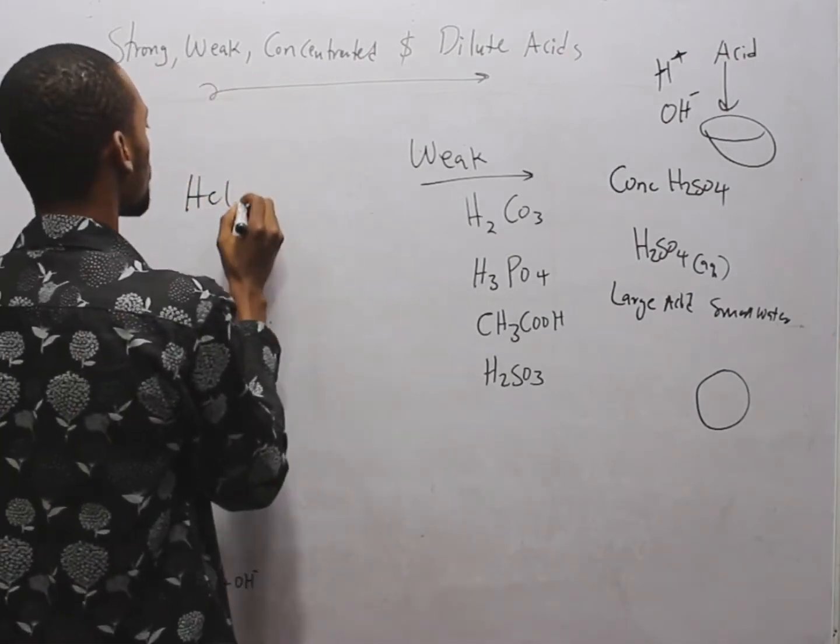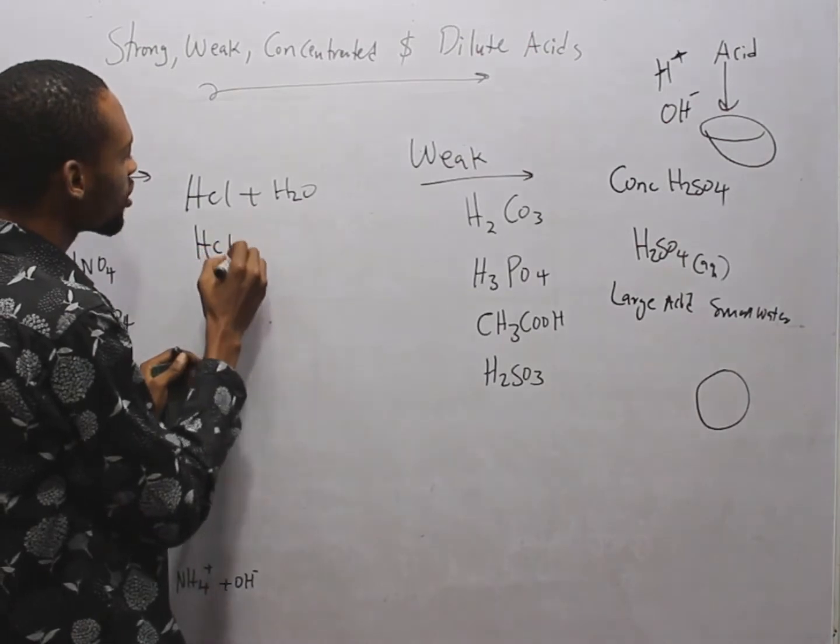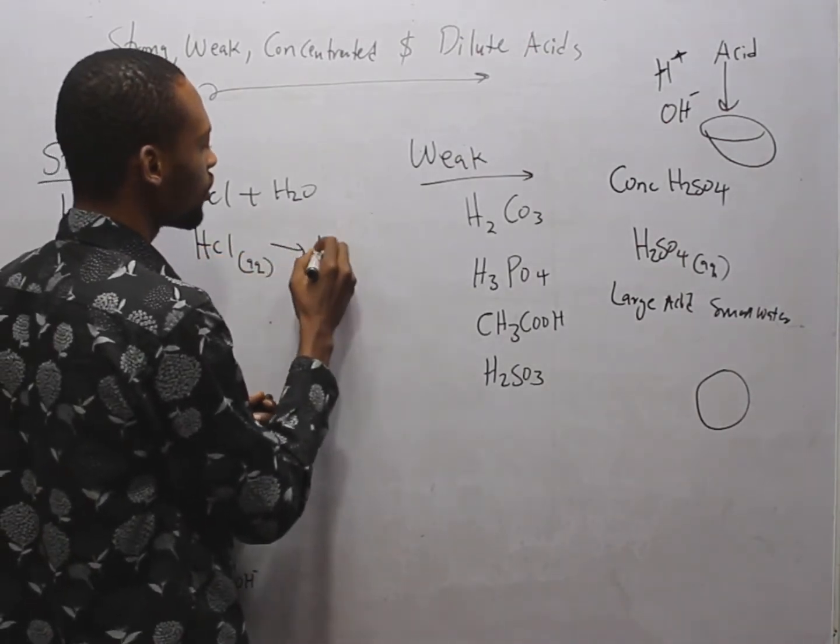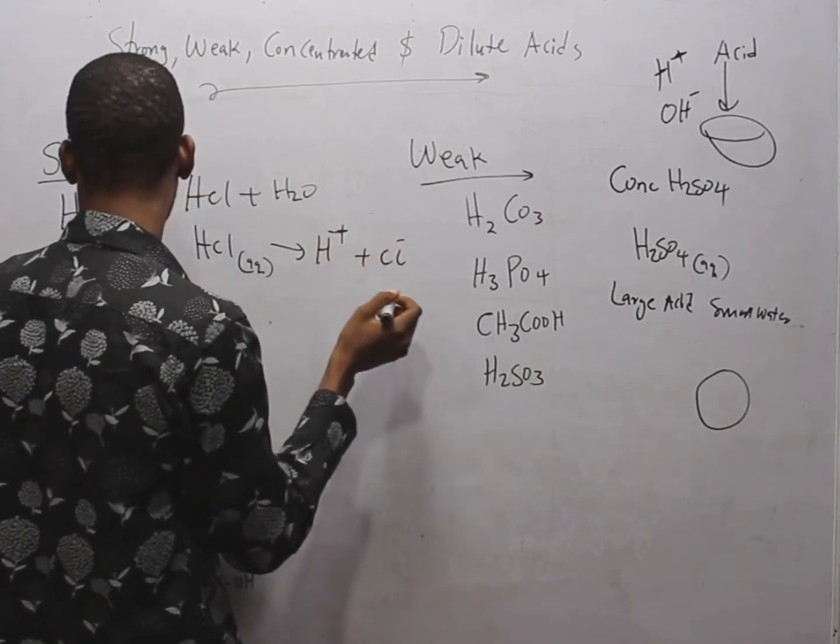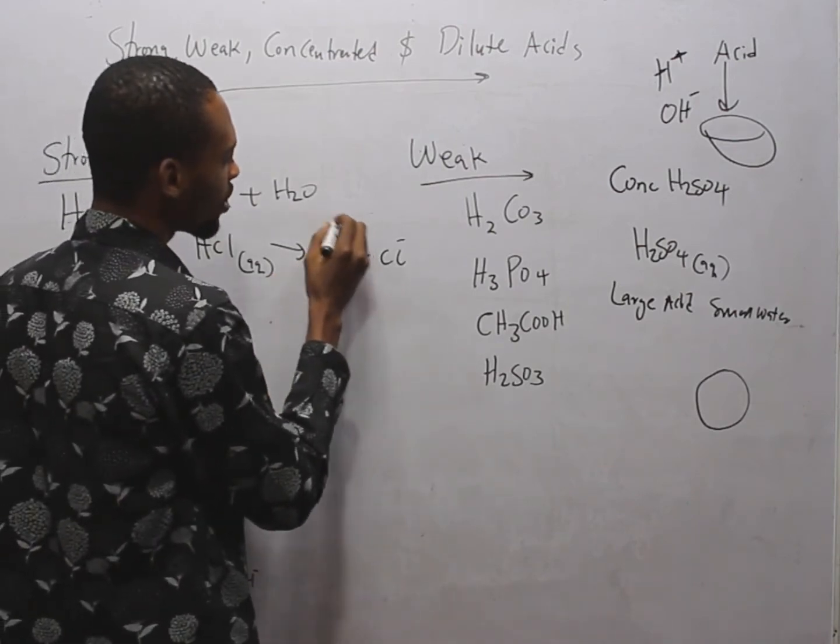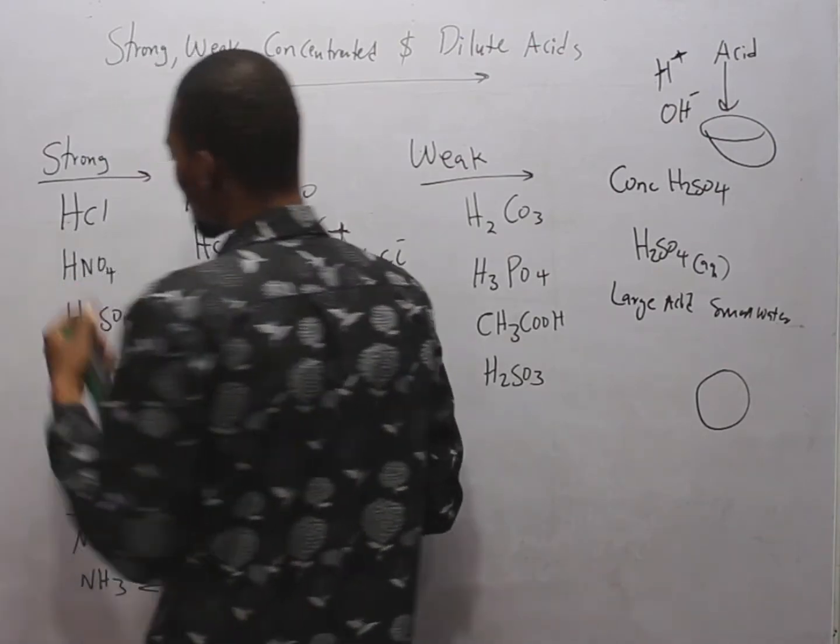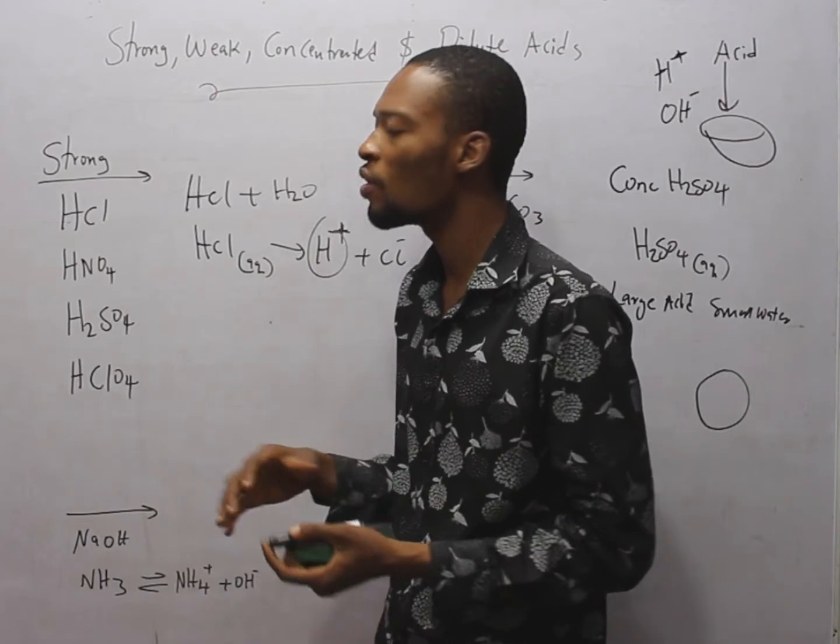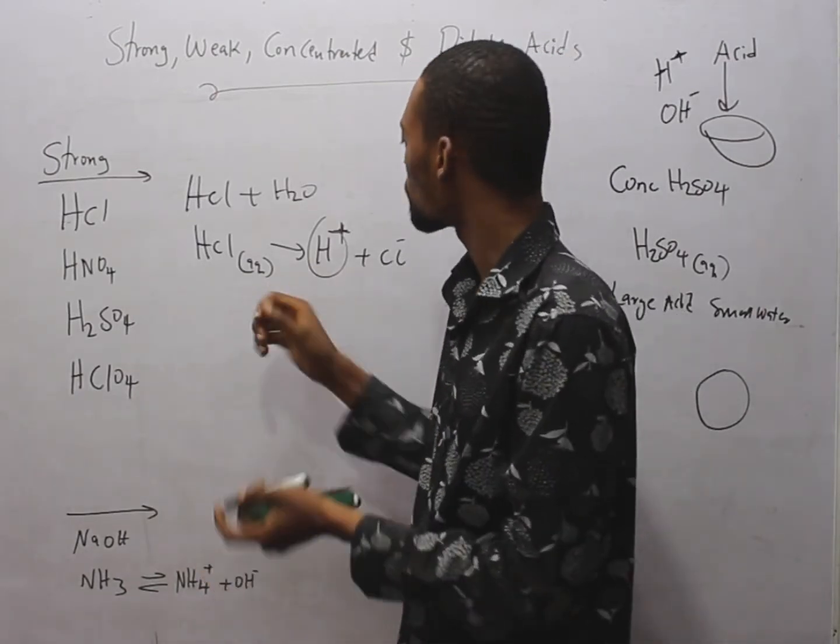For example, if you have HCl plus water, or you say HCl (aq), it gives you H+ plus Cl-. So in this case, it has ionized completely in solution. All these acids: HCl, HNO3, H2SO4, HClO4, they are strong acids because they ionize completely to produce H+.